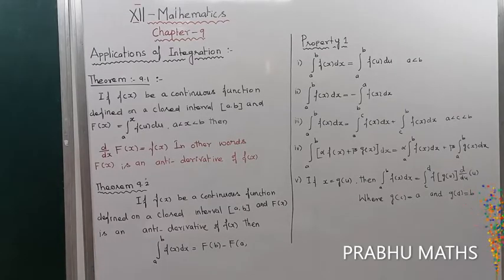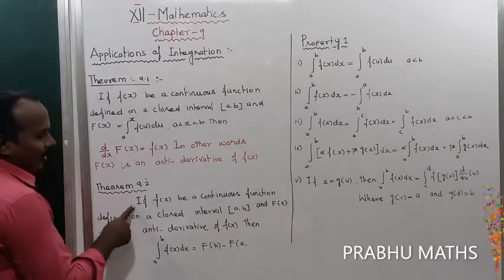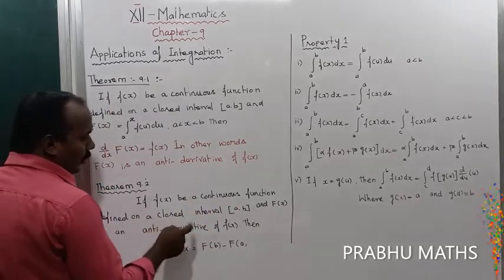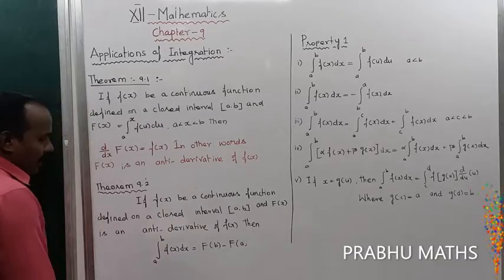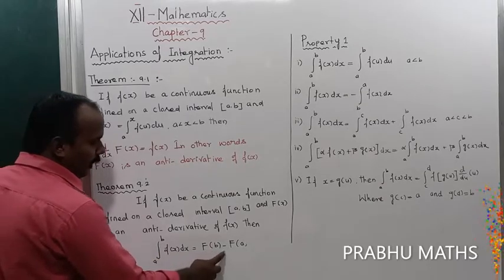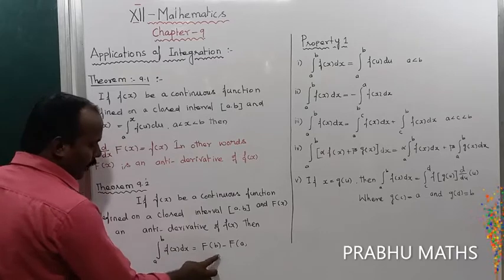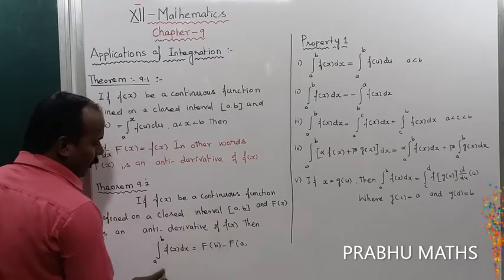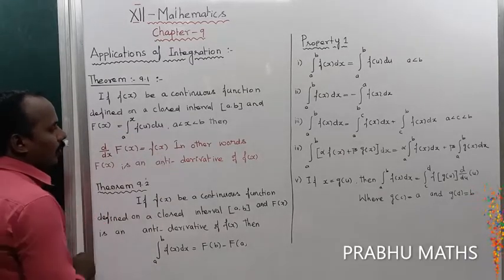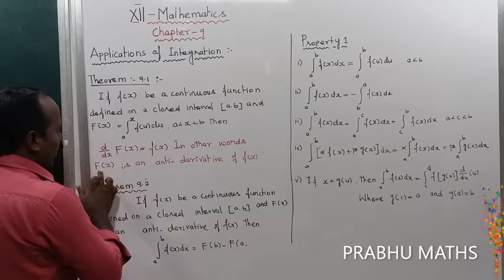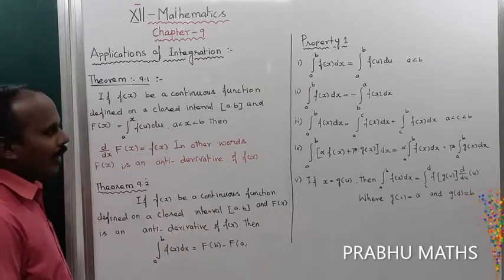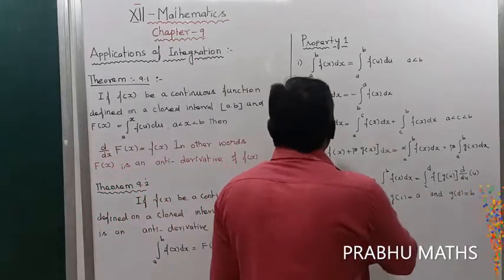Theorem 9.2 is the Second Fundamental Theorem: if f of x is a continuous function defined on the closed interval [a, b], and F of x is the anti-derivative of f of x, then the integral from a to b of f of x dx equals F of b minus F of a — upper limit minus lower limit. The first fundamental theorem says capital F of x differentiated gives small f of x, meaning F of x is the anti-derivative, and anti-derivative means integration.